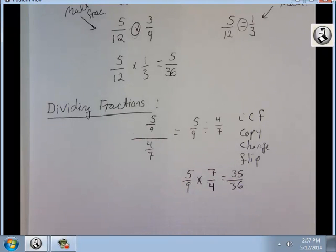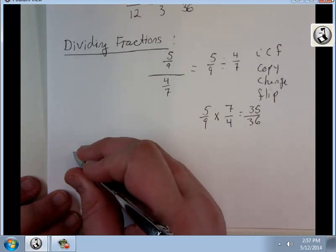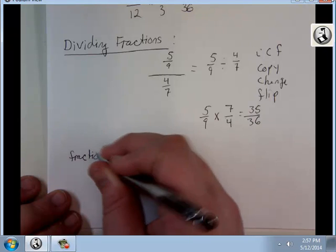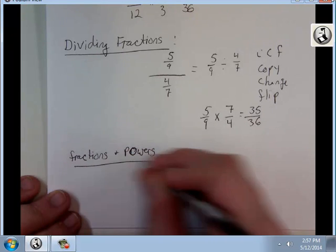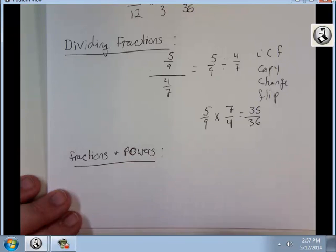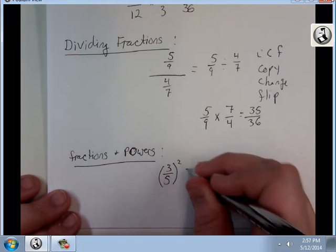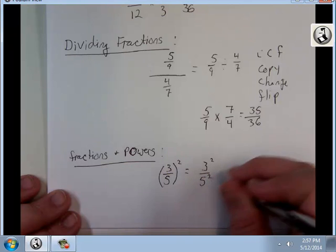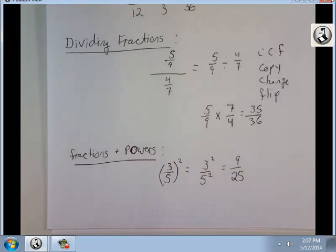Real quickly, even though I don't have any questions on it, let me give you exponents. We'll call it fractions and powers. Let's say we have 3 over 5 squared. It's the same thing as 3 squared over 5 squared, which is 9 over 25. And again the same questions. Reduced? Yes. Proper? Yes. And that's all you need to know about how to work with fractions.